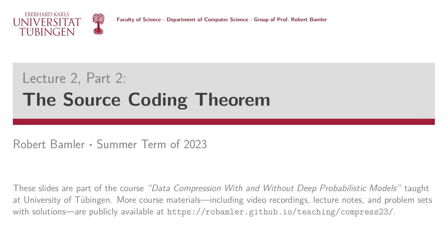In this video, we'll prove the important source coding theorem, which states a fundamental lower bound on the expected bitrate of lossless compression. This is the fourth video of our university course on data compression with and without deep probabilistic models. You can find a link to a playlist with all videos from this course in the video description, along with links to lecture notes, problem sets, and solutions.